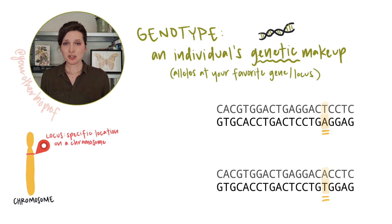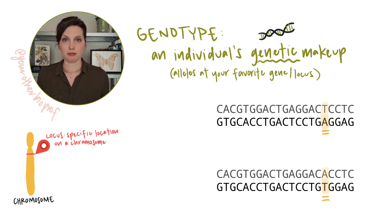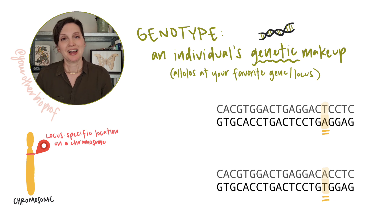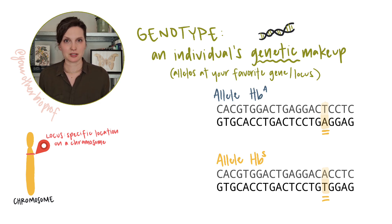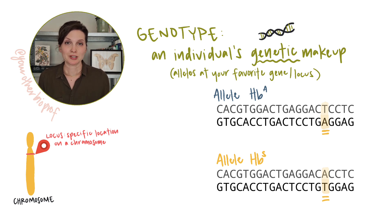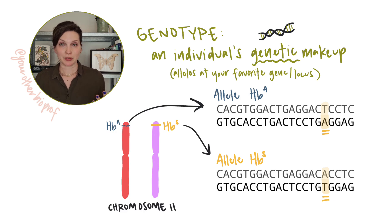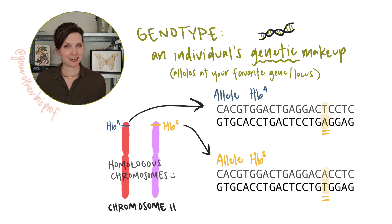You could show an individual's genotype as the actual DNA sequence of their alleles, but that gets a little bit hefty. So what we tend to do is use letters, numbers, or symbols as a sort of abbreviation for alleles. For humans and most other animals, we inherit one copy of each chromosome from each parent, so two copies of each chromosome — we're diploid.